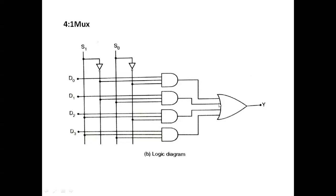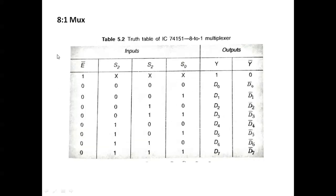An 8-to-1 multiplexer has three select lines with combinations 000 through 111. There is an enable condition — if enable is 1, the MUX is not enabled. If enable is 0, each input is enabled and you get the output from D0 through D7, with an inverted output shown here.